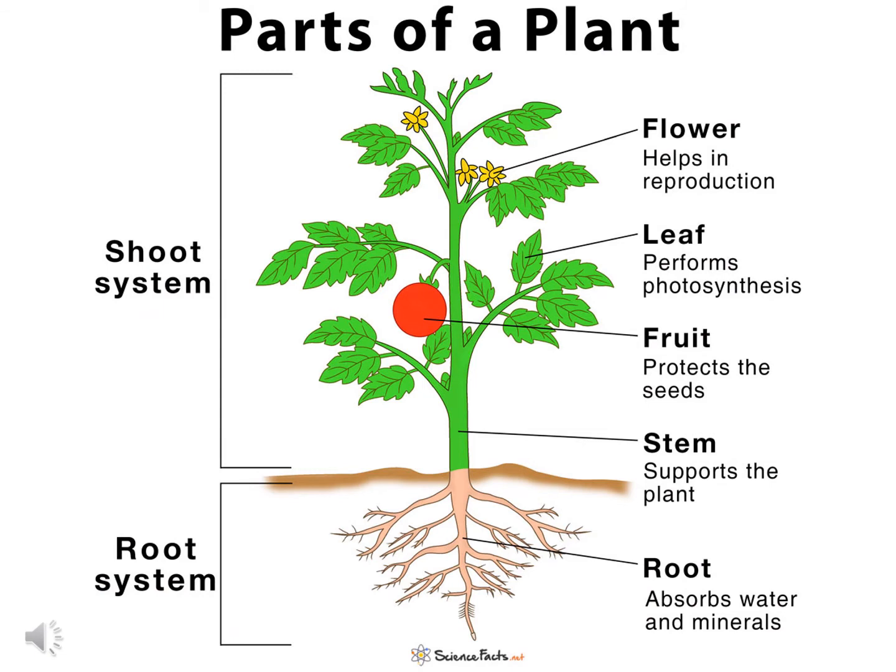A plant has two systems: the root system and the shoot system. The root of the plant grows below the soil, while the shoot system grows above the soil. The shoot system consists of stem, fruits, leaves and flowers.